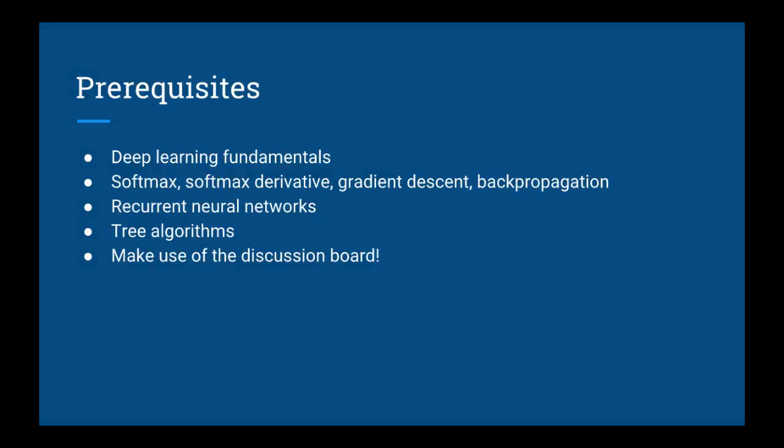So, what do you need to know to really fully understand this course? Since this is Part 6, I'll assume you have most of the knowledge from the previous courses, especially the fundamentals. You'll want to be familiar with softmax, its derivative, gradient descent, and backpropagation, because you're going to need those to understand Word2Vec as well as GloVe.